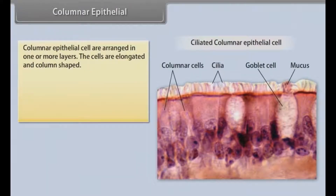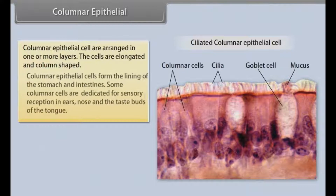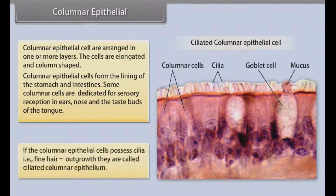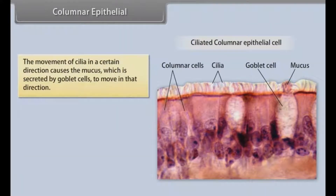Columnar epithelial cells are arranged in one or more layers. The cells are elongated and column shaped. Columnar epithelial cells form the lining of the stomach and intestines. Some columnar cells are dedicated for sensory reception in ears, nose, and the taste buds of the tongue. If the columnar epithelial cells possess cilia — fine hair outgrowths — then they are called ciliated columnar epithelium. The movement of cilia causes the mucus secreted by goblet cells to move in that direction.